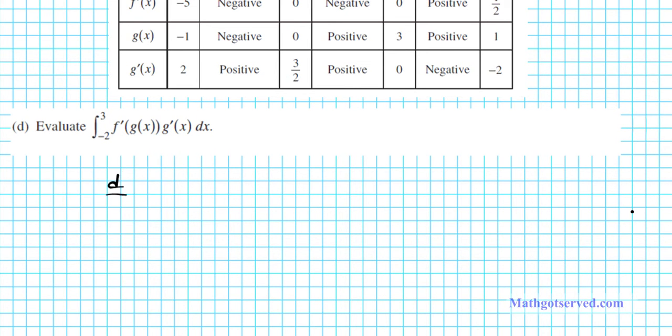Remember the chain rule, the derivative d dx of f of g of x. If you differentiate f of g of x, you're going to have f prime of g of x times g prime of x. That's the chain rule.